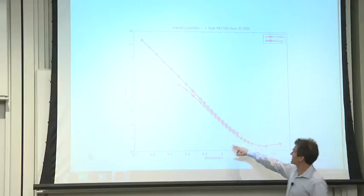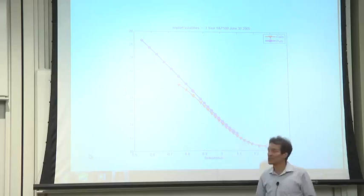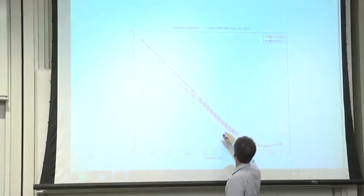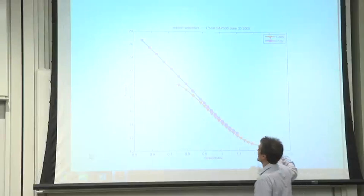The at-the-money volatility on this day was about 14%. It's a fairly quiet day. But notice the implied volatility, the Black-Scholes formula says this should be flat. Everybody should be trading at the same implied volatility. The implied volatilities, in fact, are not flat.